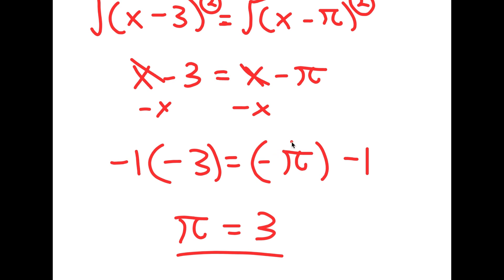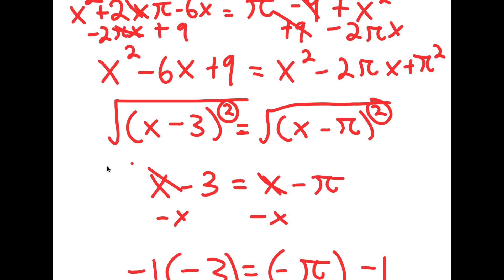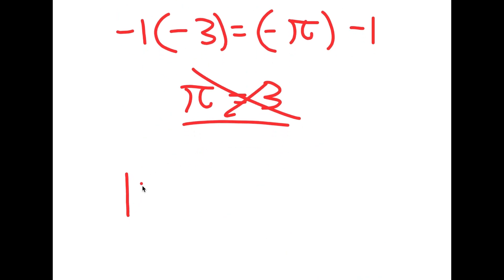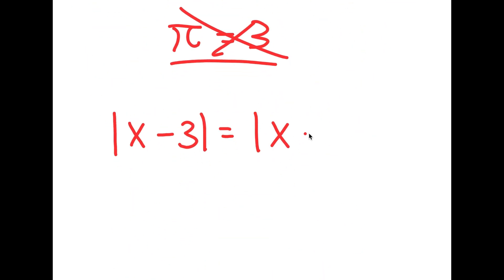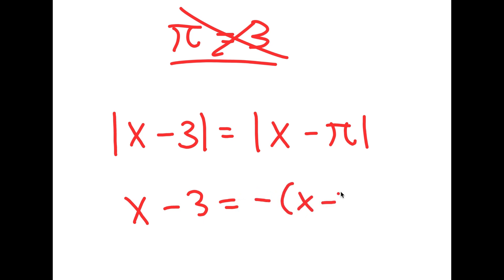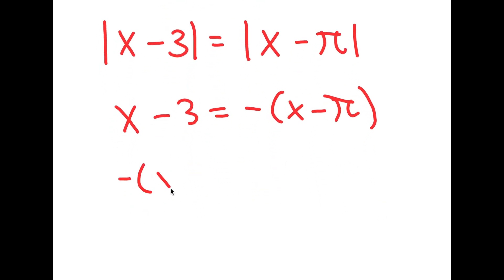Where did I go wrong? Because obviously we know that pi is not equal to 3. Well, I actually went wrong on this step right here, where I said that the square root of (x minus 3) squared and the square root of (x minus pi) squared is equal to x minus 3 and x minus pi respectively. This is actually not true. The square root of (x minus 3) squared isn't equal to x minus 3 — it's equal to the absolute value of x minus 3. And the same goes with the square root of (x minus pi) squared — it's not equal to x minus pi, it's equal to the absolute value of x minus pi.